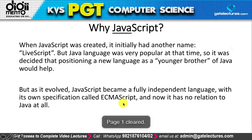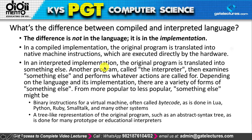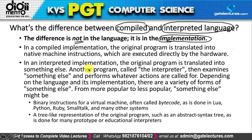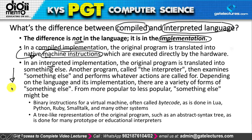There are two kinds of programming language implementation: compiled and interpreted. In compiled implementation, the original program is translated to machine instructions. In interpreted implementation, the original program is not directly translated to machine instructions — instead, languages like Python, Ruby, and Smalltalk translate to bytecode, and others produce a tree-like representation such as an abstract syntax tree.